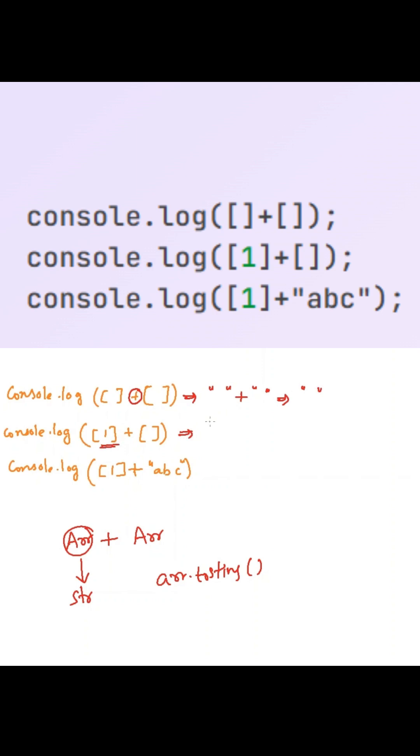Here array of 1 will be converted into string 1. Whereas empty array will be converted into empty string, which will concat with that to form string 1.